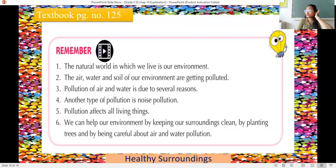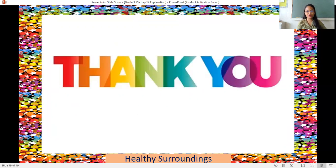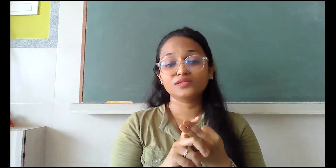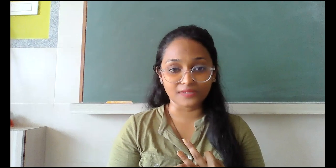To recap what we have learned: the natural world in which we live is our environment. The air, water and soil of our environment are getting polluted due to several reasons. Another type of pollution is noise pollution, and pollution affects all living things. We can help our environment by keeping surroundings clean, planting trees, and being careful about air and water pollution. This was the explanation video of chapter 14, Healthy Surroundings. I hope you enjoyed this video. Thank you so much. Bye.